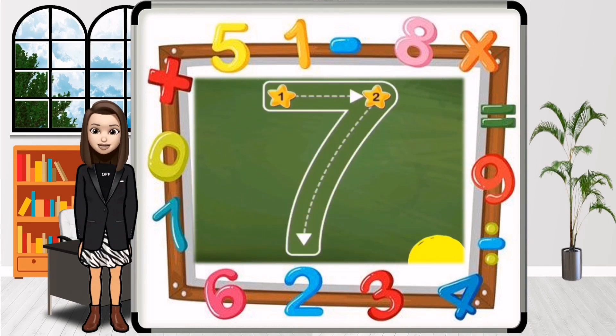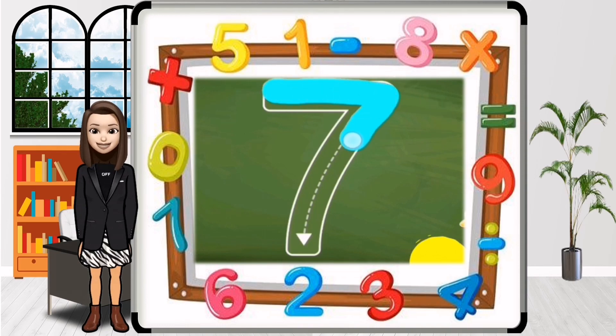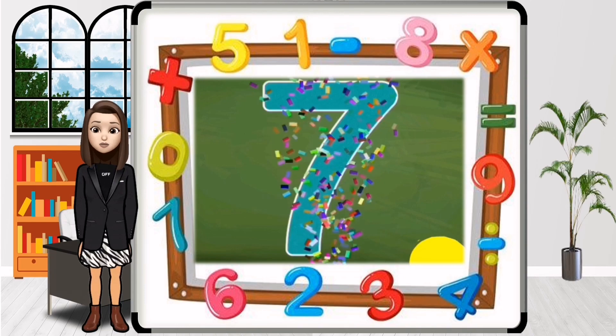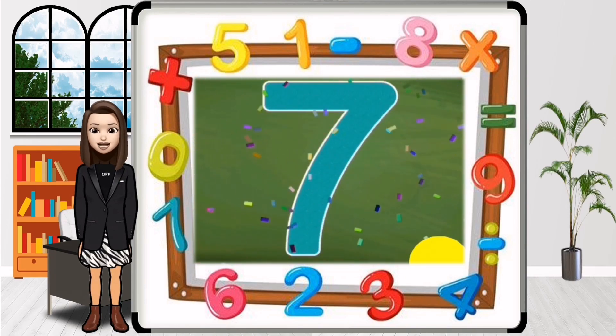Number 7. Very easy. First, draw a sleeping line and then slanting line. Make my number 7.